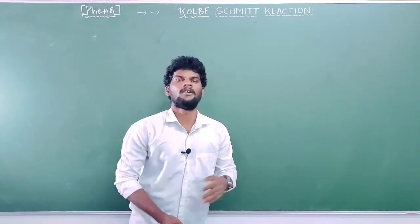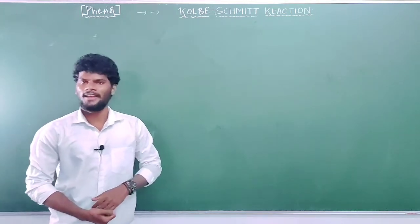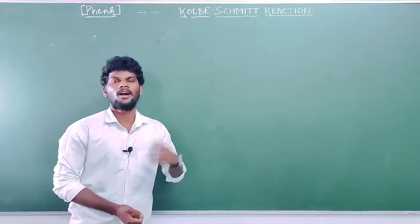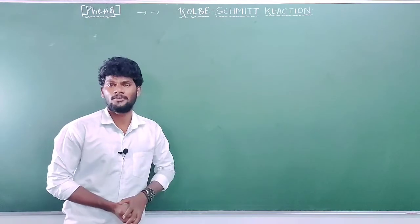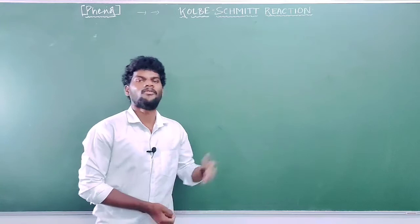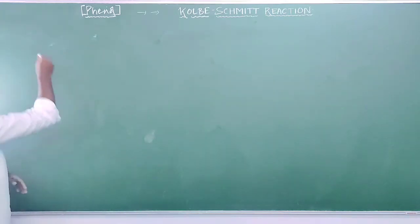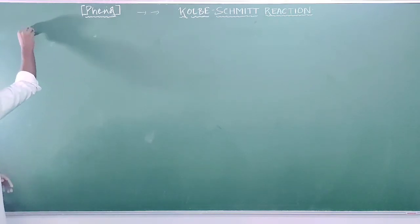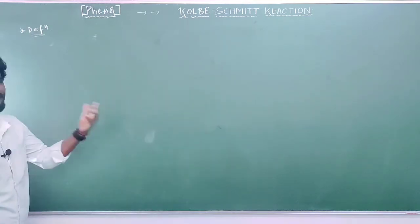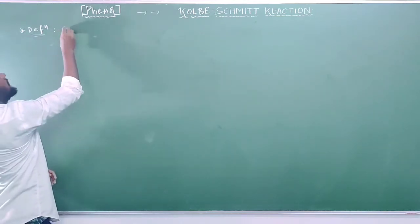What is the Kolbe-Schmitt reaction? The definition: it is a type of carboxylation reaction where phenol is converted into salicylic acid by treatment with carbon dioxide under 6 atmosphere pressure at 125 degree Celsius, in presence of base and followed by acid hydrolysis. Write the definition in your own words; you can also remember it by doing the reaction mechanism.